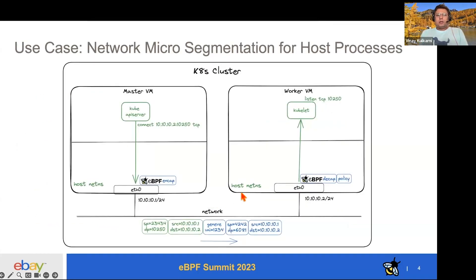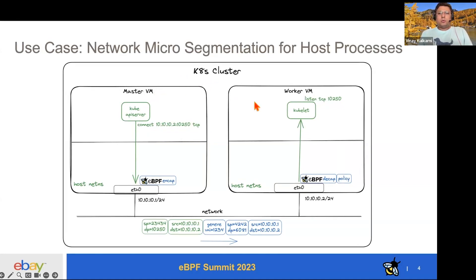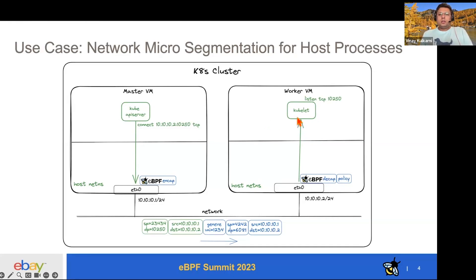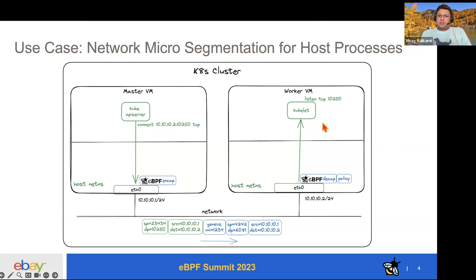Our use case is network micro-segmentation for host processes. Consider a typical Kubernetes cluster: you have the master node and the worker node. In the master node, you have the kube API server running, and it connects to the kubelet, which is listening on TCP port 10250. The API server connects to kubelet for things like kubectl exec or kubectl logs. There is no good reason for anyone other than the kube API server to be connecting to this port — if there is, we need to know about it, as it's most likely some kind of a DoS attack.